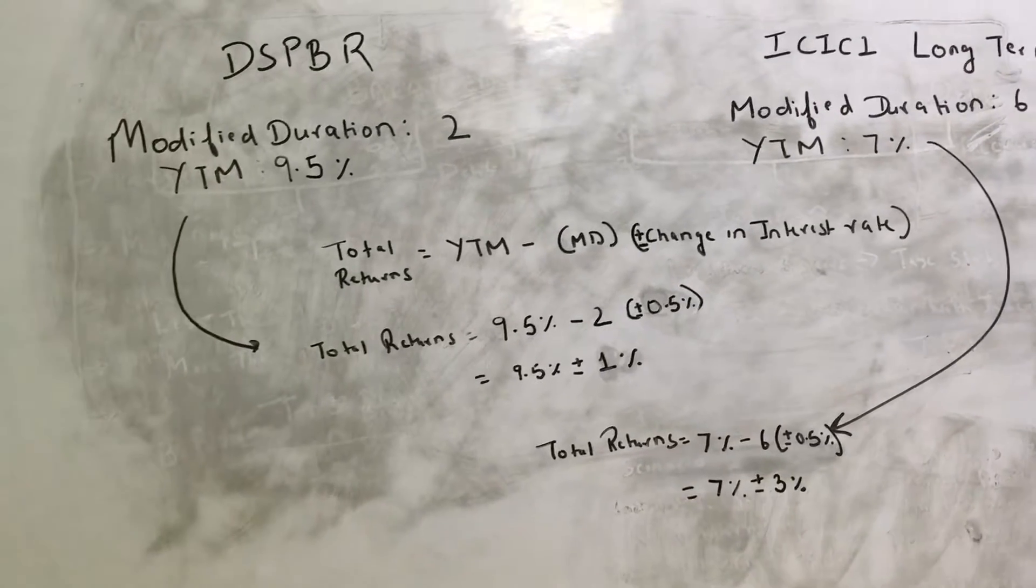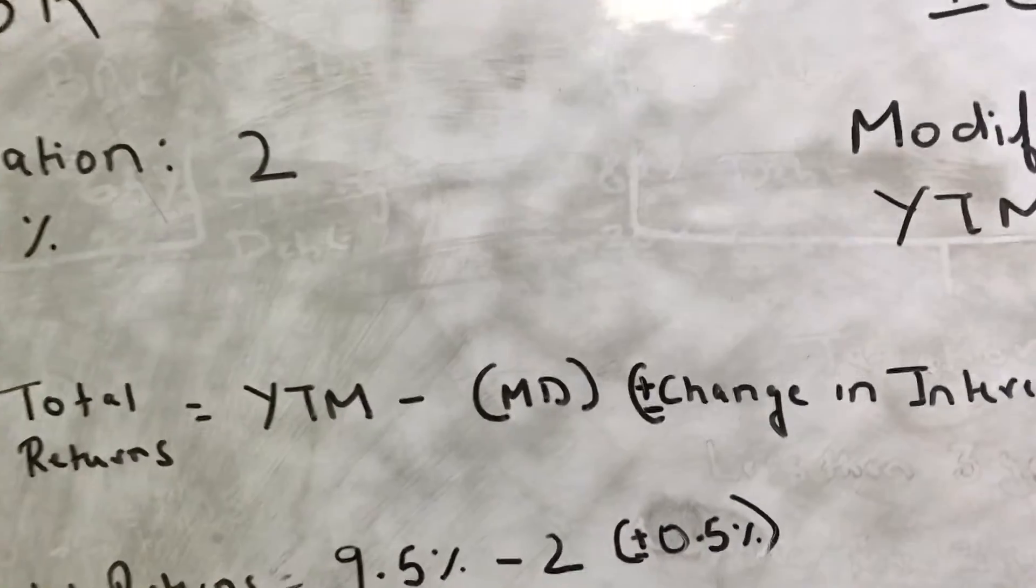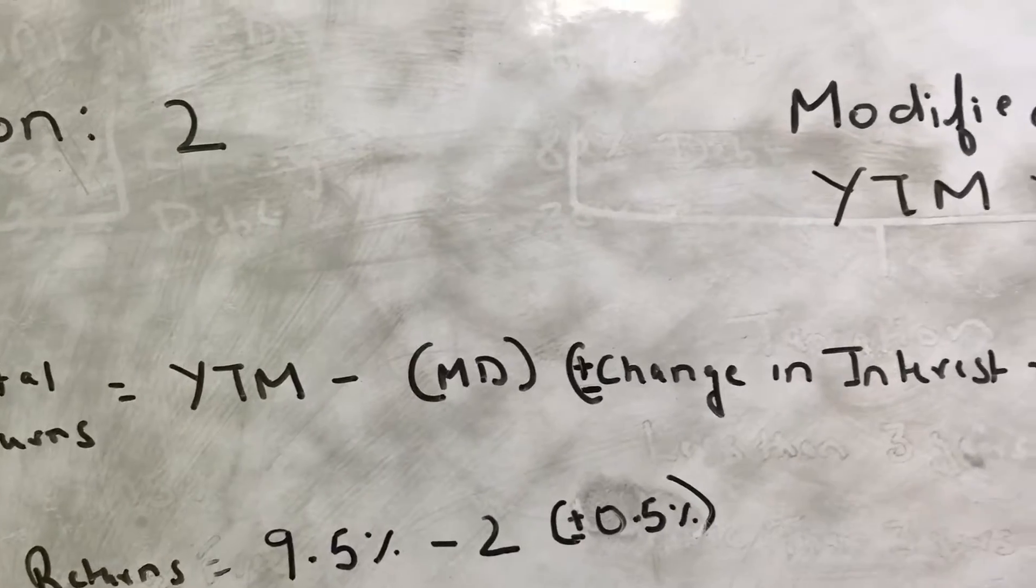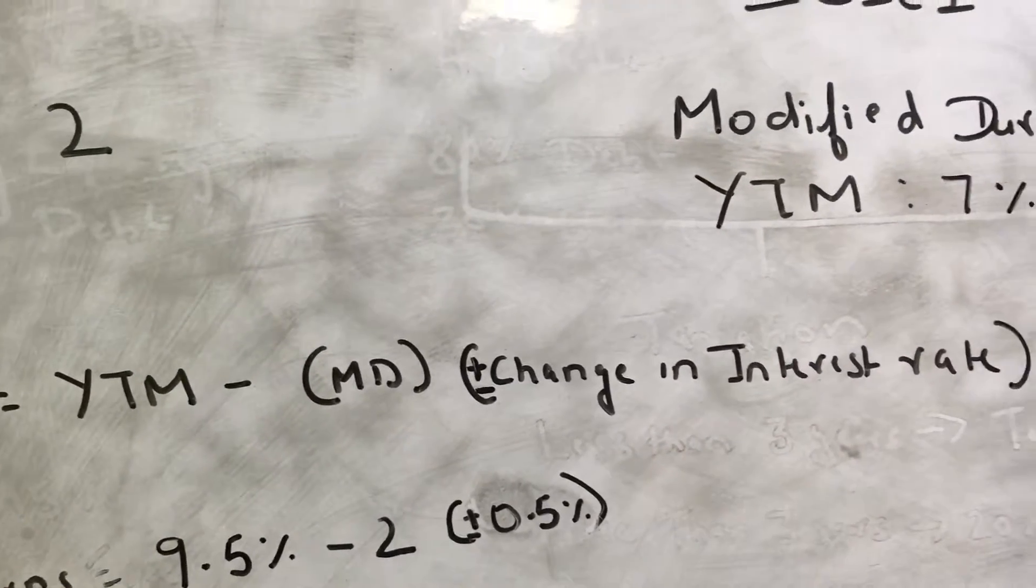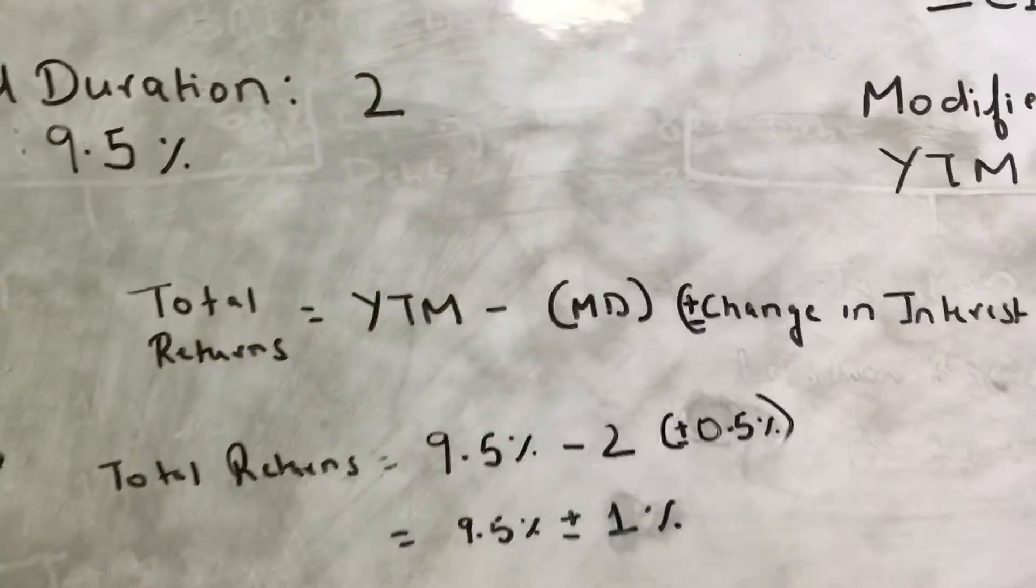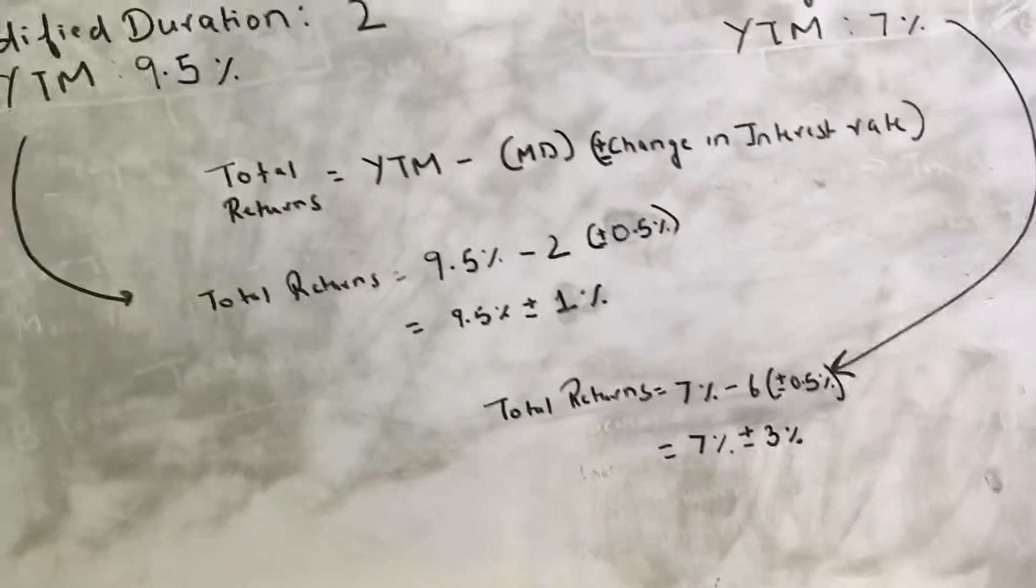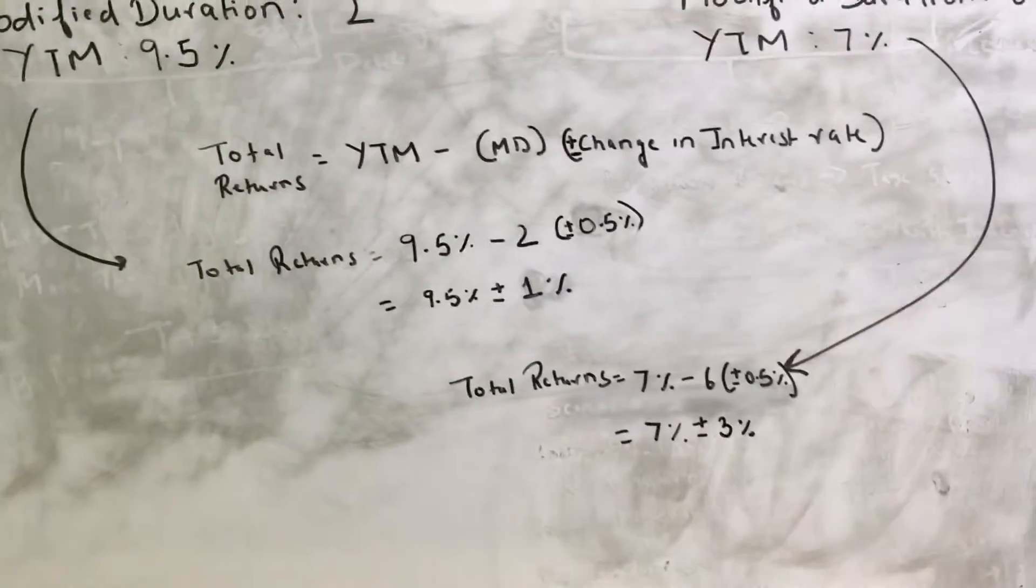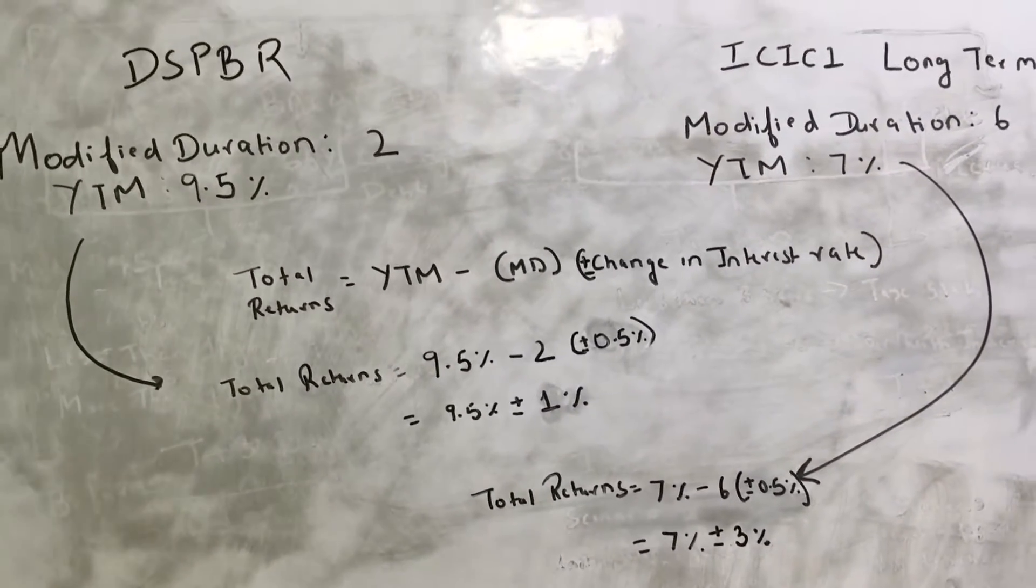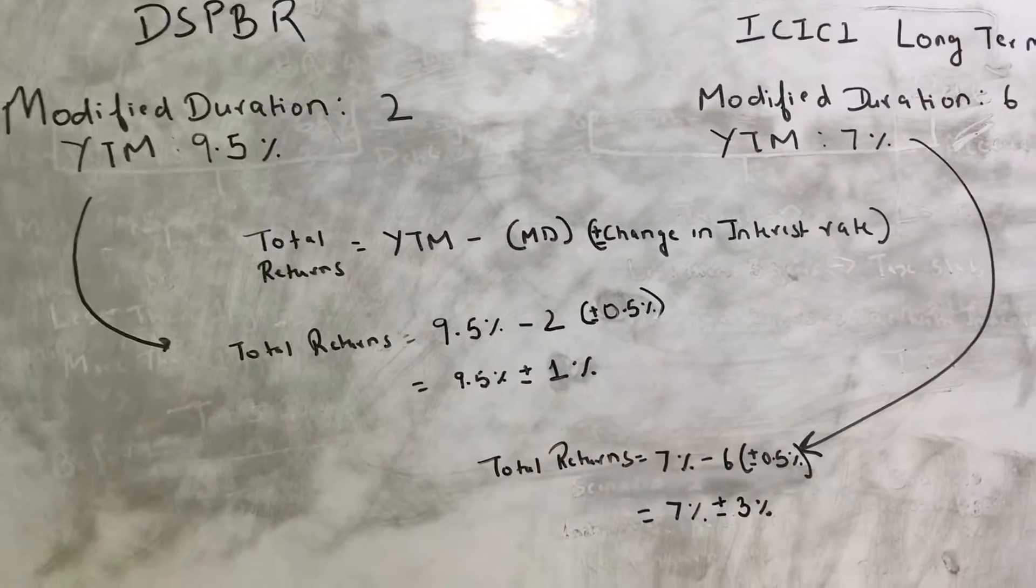Now this particular formula, total returns equals YTM minus MD plus minus change in interest rate. This is not a book formula but this is more of a thumb rule to explain the modified duration.